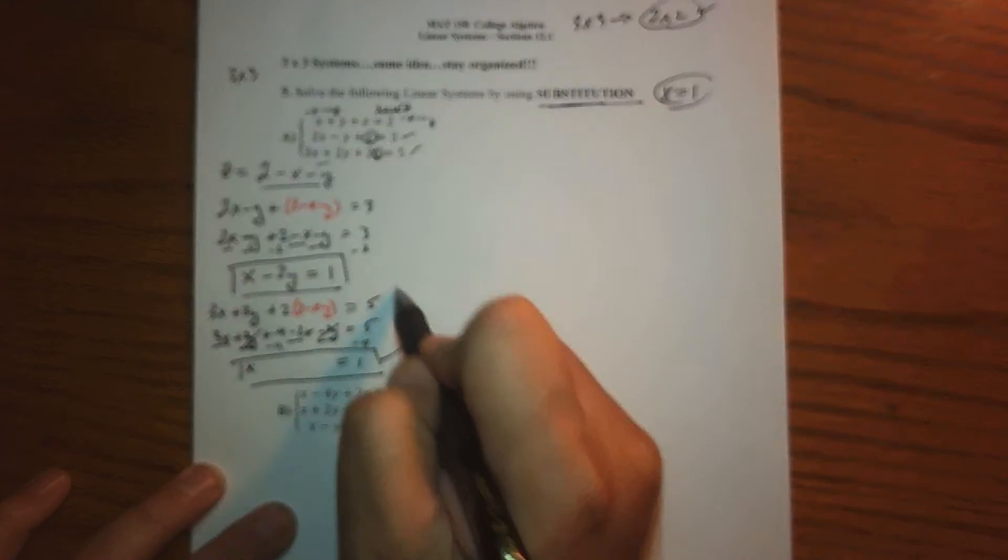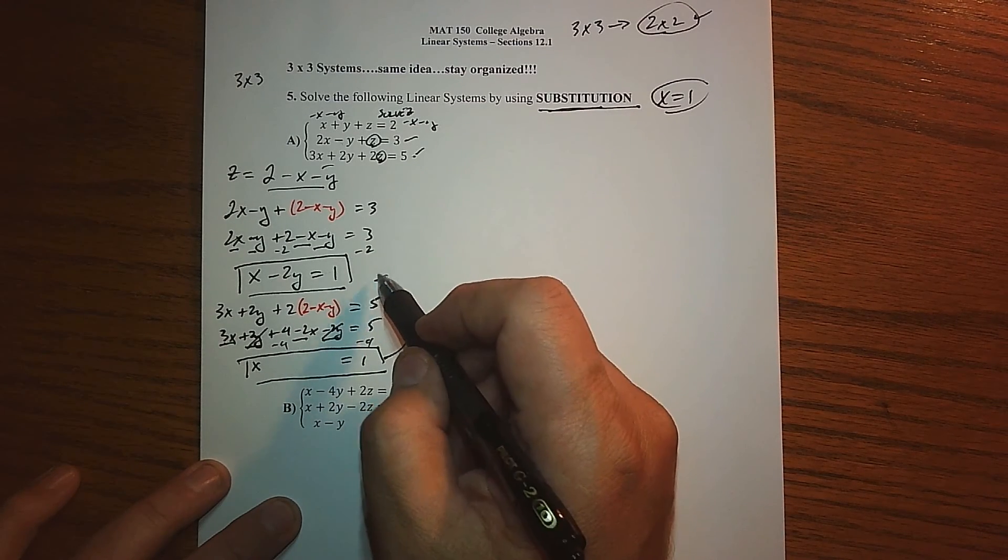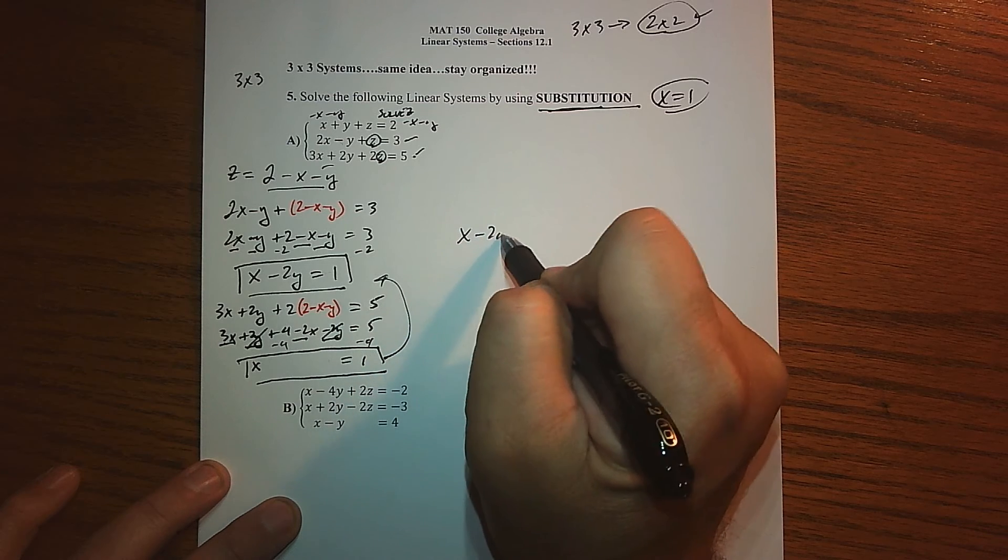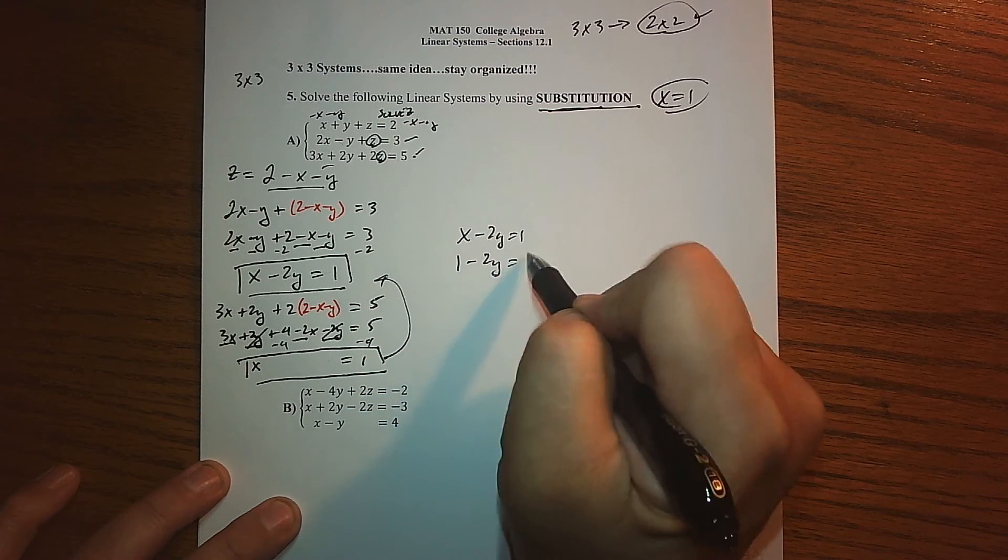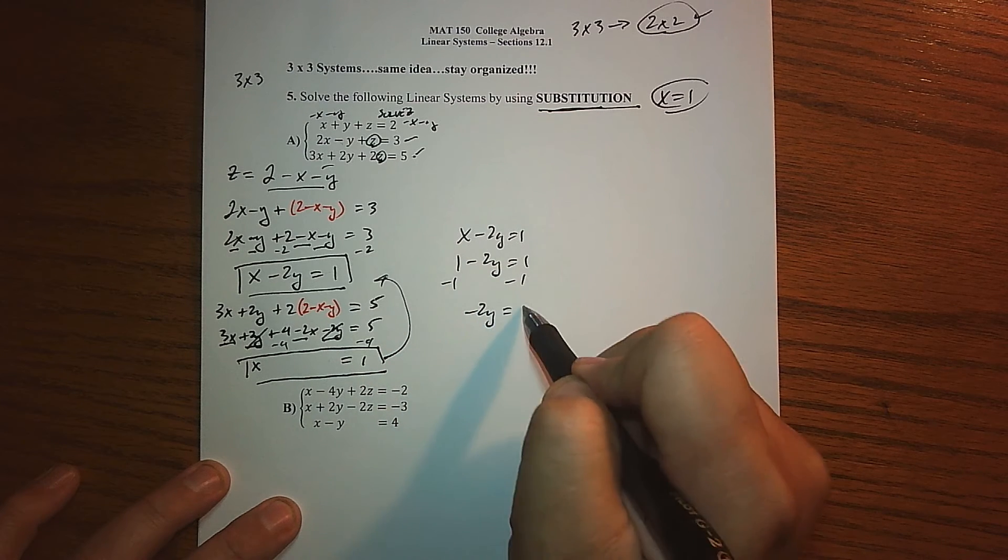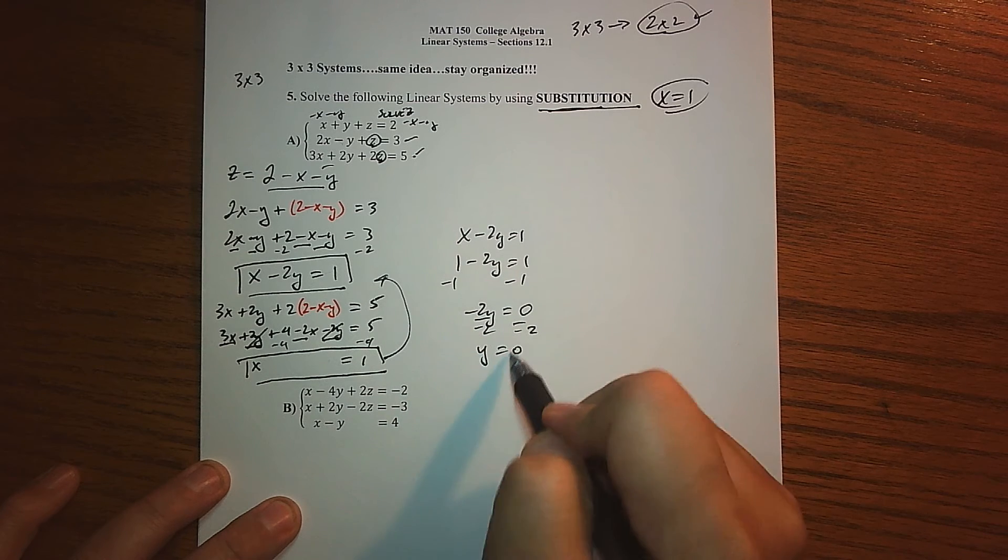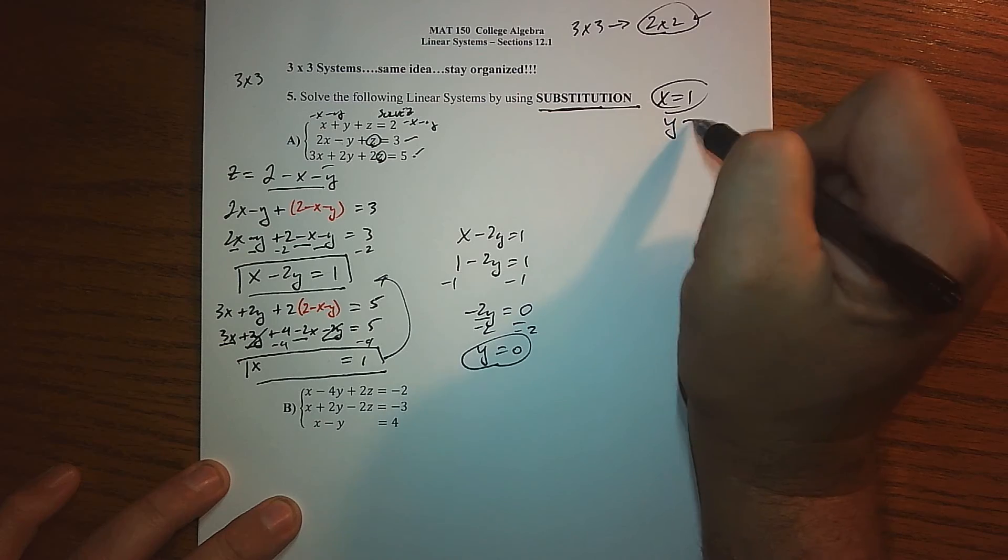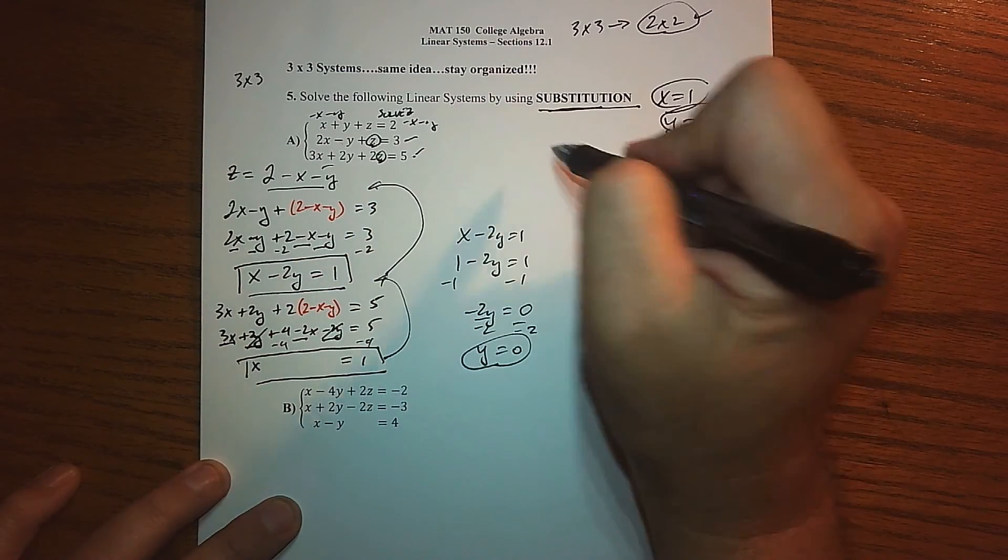X is equal to 1. Now that I know a value, I just go back and start making some substitutions to find the other values. So X minus 2Y equals 1. If I substitute what I know for X, we can solve for Y. 1 minus 1 minus 1, we get negative 2Y equals 0, divide by negative 2, we get Y equals 0.